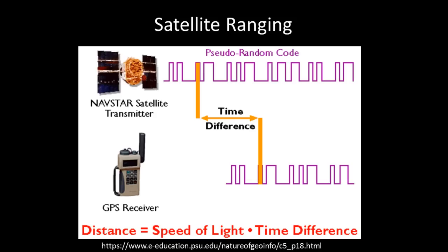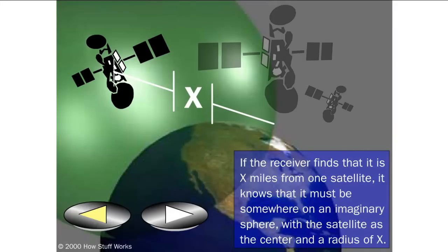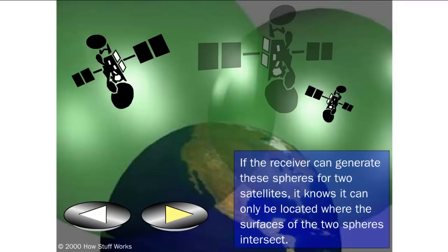To make sure that you understand these ideas, the following is a simple video that I think you will find useful for understanding the concepts behind how GPS locates positions on the Earth's surface. To locate itself, a GPS receiver must find the distance to three satellites of known positions. If the receiver finds that it is x miles from one satellite, it knows that it must be somewhere on an imaginary sphere, with the satellite as the center and a radius of x.